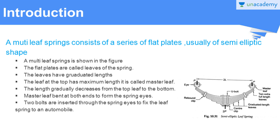The leaves have graduated length, as you can see in the figure. The leaf at the top has maximum length and it is called as the master leaf. This leaf of this multi-leaf spring is called the master leaf because it has the maximum length. The length gradually decreases from the top leaf to the bottom, as you can observe from the figure — the lengths of these flat plates or leaves are gradually decreasing.